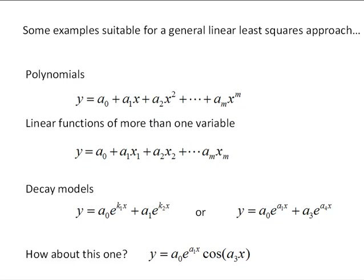Here are some examples suitable for a general linear least squares approach. First, polynomials: z0 equals 1, z1 equals x^1, z2 equals x^2, etc. A polynomial works as a linear combination of basis functions where each basis function is an increasing power of x.